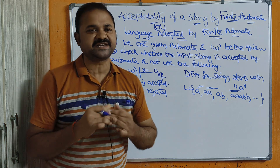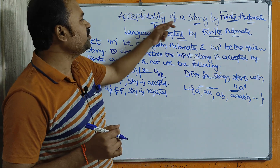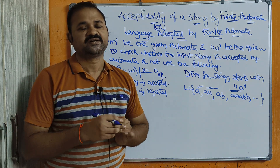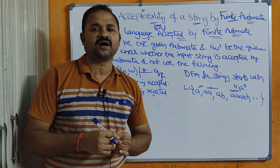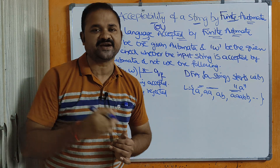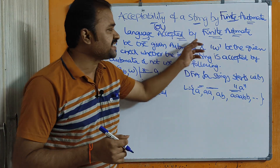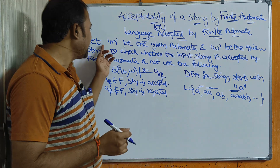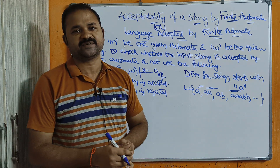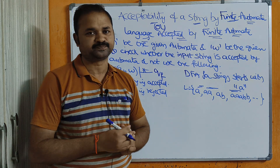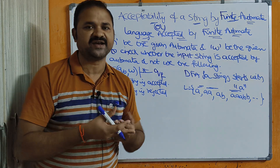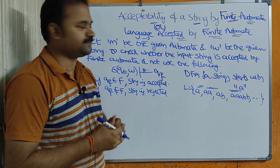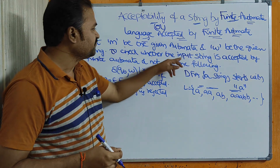Let us discuss the acceptability of a string by finite automata — either deterministic finite automata or non-deterministic finite automata — and the language accepted by finite automata. Let M be the given finite automata, representing the machine we are designing, and W be the given input string.